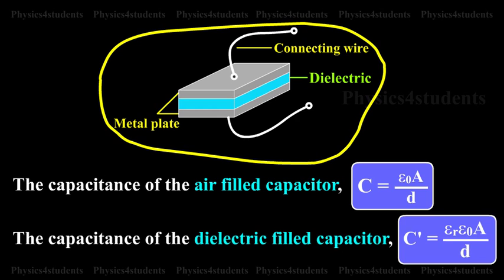The capacitance of the dielectric filled capacitor, C dash is equal to epsilon r into epsilon naught into A divided by D.